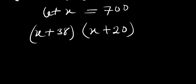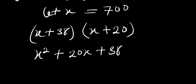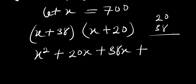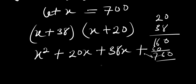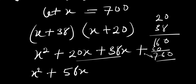The next thing we do is expand this bracket. We get x squared, plus 20x plus 38x, plus 20 times 38. Computing 20 times 38: 8 times 0 is 0, 8 times 2 is 16, 3 times 6 gives us 760. So we have x squared plus 58x plus 760.